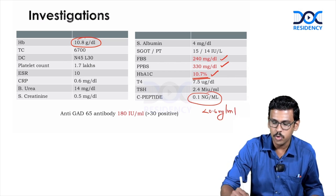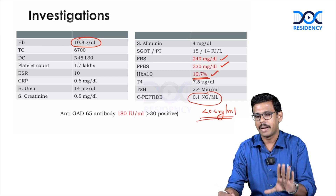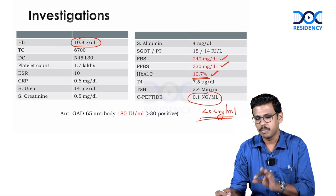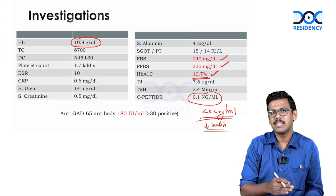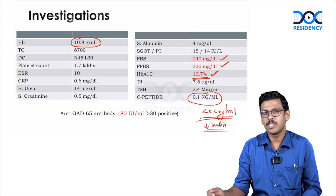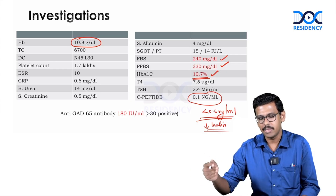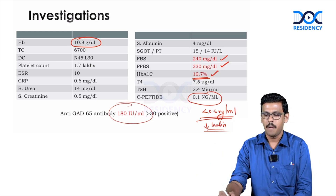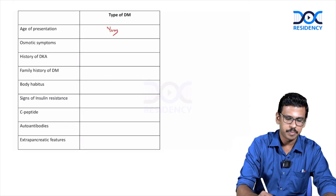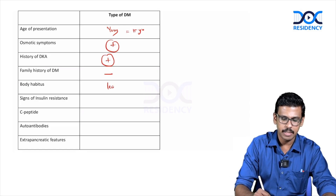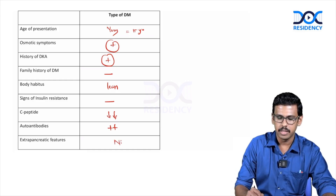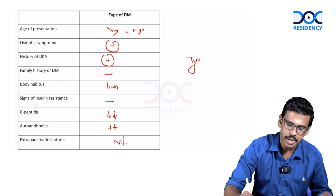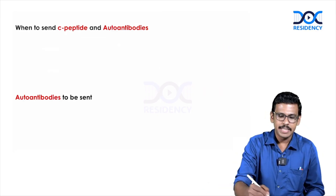Investigations show elevated fasting and postprandial glucose with a high HbA1c. C-peptide is less than 0.6 ng/mL — a cutoff suggestive of reduced endogenous insulin production. The GAD antibody is strongly positive. Taken together — young age, osmotic symptoms, DKA history, lean body habitus, very low C-peptide, positive autoantibody, and no extra-pancreatic features — all point to a diagnosis of type 1 diabetes.